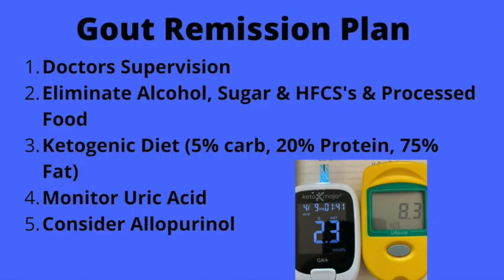Your eating plan should be about 5% carbohydrates, 20% protein, and the rest — 75% — fat.